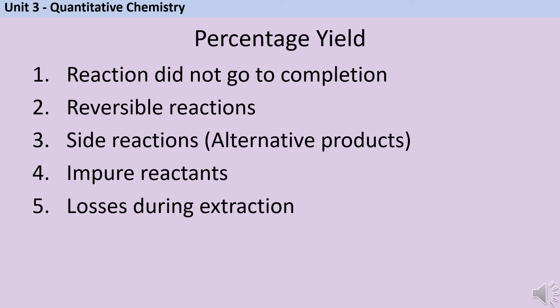The fifth reason percentage yield might not be as high as you'd expect, and to be honest this is the big one, is because of losses during extraction. Imagine you're making fertilizer in a massive factory. You make all that ammonia and then you have to pump it somewhere else through pipes. Well little bits of ammonia are going to get stuck on those pipes the whole time. That's also true if you're doing a reaction in the lab yourself. Chances are that when you're scraping out a beaker or a crucible or some kind of reaction vessel, you're going to leave some of the product behind, and so you're going to have percentage yield that's less than 100%.